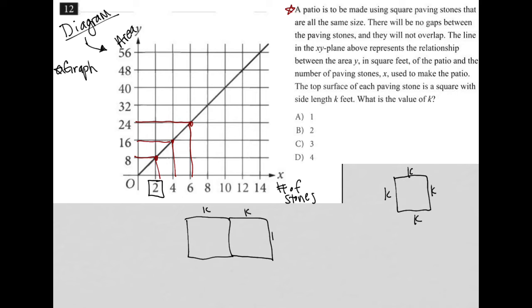So I'd have k on each side. The area of those two paving stones is eight square feet.